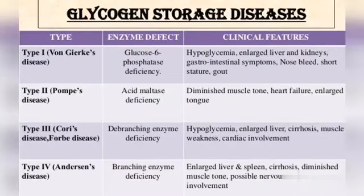Several types of GSD can occur, but these four are the most common ones, and as you can see, each one affects a different part of the body. If you have GSD, some of the symptoms you would experience include tiredness, very slow growth, obesity, kidney problems, and breathing and heart problems.